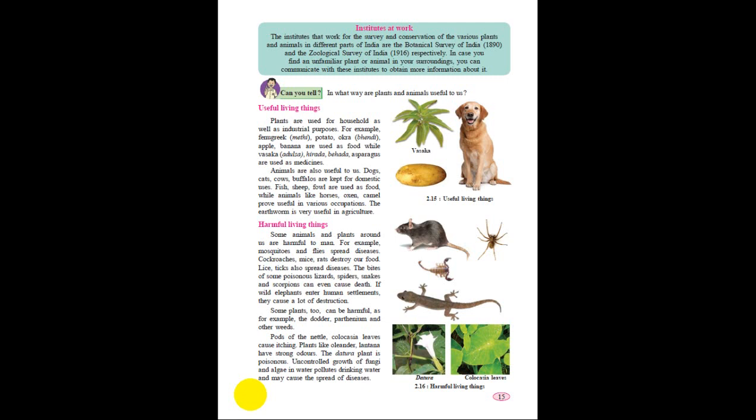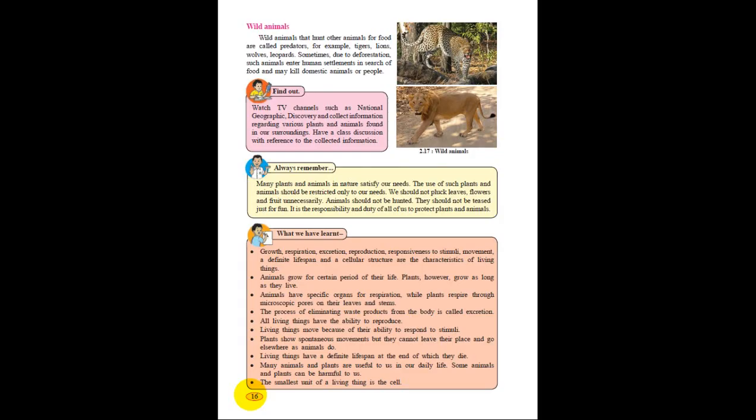Wild animals. Wild animals that hunt other animals for food are called predators, for example tiger, lion, wolves, leopard. Sometimes due to deforestation, such animals enter human settlements in search of food and may kill domestic animals or people. However, they feed on small animals out of necessity, so wild animals are harmful to those animals.